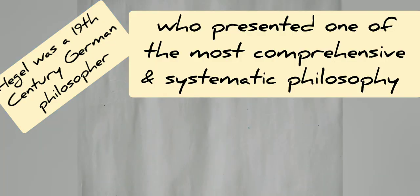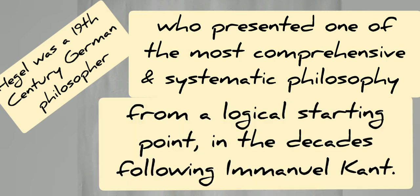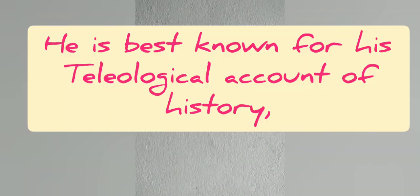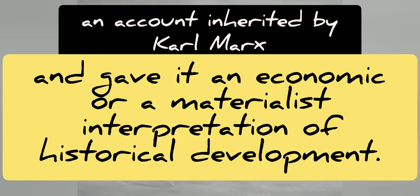Who is Hegel? Hegel was a 19th century German philosopher who presented one of the most comprehensive and systematic philosophies from a logical starting point in the decades following Immanuel Kant. He is best known for his teleological account of history, an account that was later inherited by Marx, who gave it an economic or materialist interpretation of historical development.